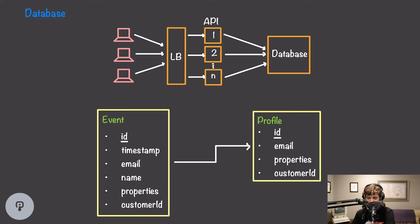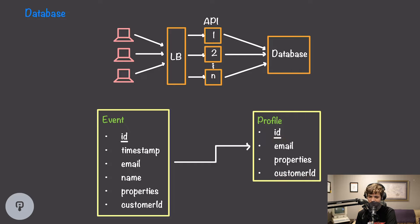Our API needs to write data to a database. That database needs to track two main pieces of data: events and profiles. Profiles consist of an email address, some properties we've set for that user, and a customer ID so we know which company owns them. Emails are not unique in this system — they're scoped to a specific customer. We also include a unique ID for each profile, though we could also uniquely identify a record by combining email address and customer ID.